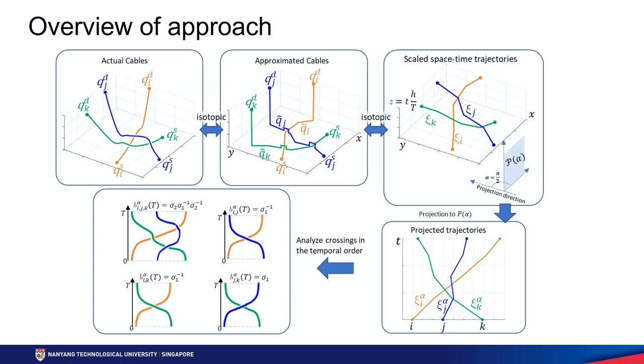So how are braids related to the tethered robots? Here we show the overview of our approach. First, consider a set of tethered robots with their cables as shown in the top left. We can establish a topological equivalence between their cables and their spacetime trajectories. Spacetime trajectories are basically plots of robot movement in the xy-plane with the z-axis being time, as shown in the top right.